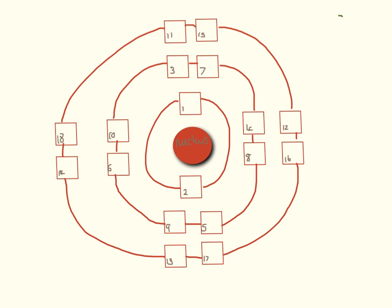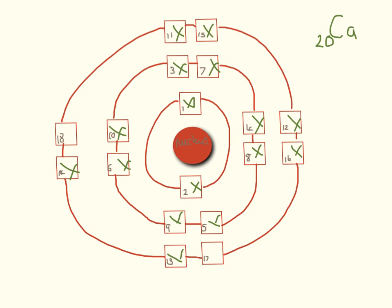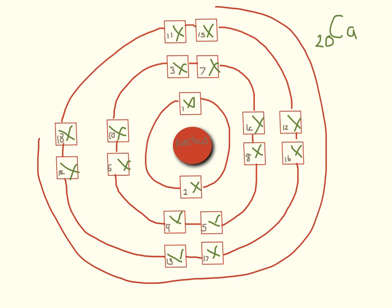For your GCSE you need to know the electron arrangement all the way up to calcium. I've only drawn three shells here because those are the most common questions you'll be asked, but you do need to know all the way up to calcium, which has 20 electrons. We fill up: two in the first shell, eight in the second, eight in the third, counting up to 18, then we need to add another shell on the outside for electrons 19 and 20 for calcium.